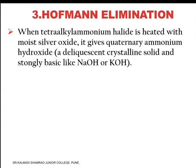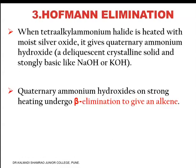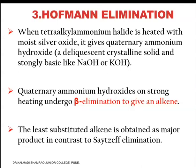The third reaction is Hoffman elimination. When tetraalkyl ammonium halide is heated with moist silver oxide, it gives a quaternary ammonium hydroxide, which is a deliquescent crystalline solid and strongly basic in nature like NaOH or KOH. Quaternary ammonium hydroxides on strong heating undergo beta-elimination to give an alkene — the least substituted alkene is obtained as the major product, which is in contrast to Zaitsev's elimination rule.